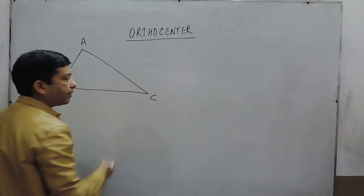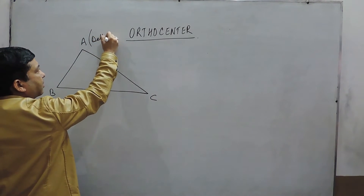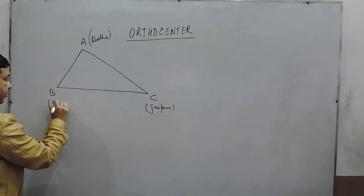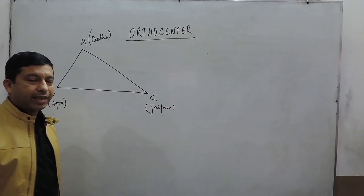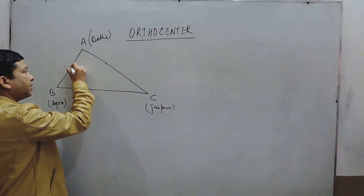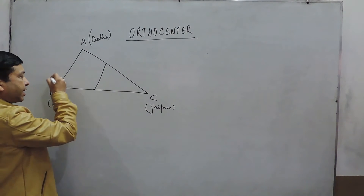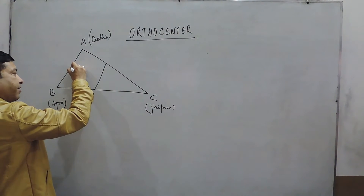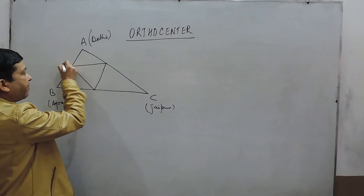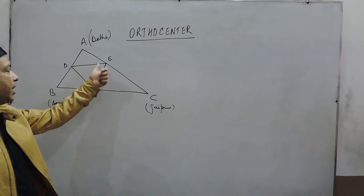Suppose we have a triangle ABC, or we can say these are basically three places. Let's say this is Delhi, this place is Jaipur, and this is Abu. These are basically three highways connecting the three cities, and the government wants that in between the three highways, they should connect the three cities together, such that each highway is connected to the other highways, and the government wants to make the highway in such a manner that it is the lowest, closest distance between the points.